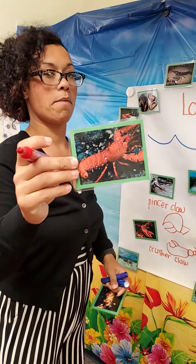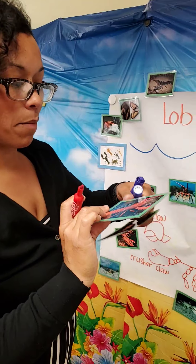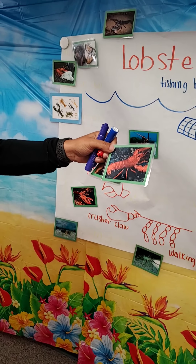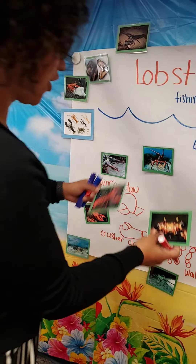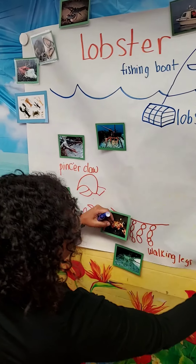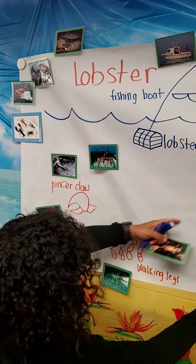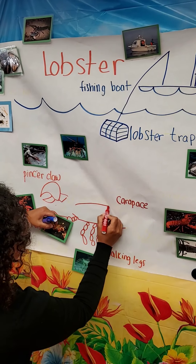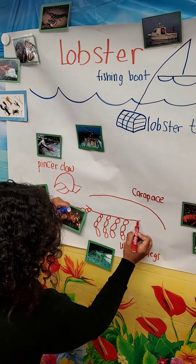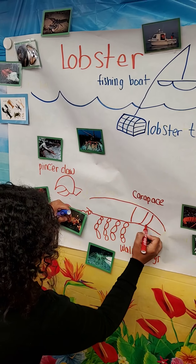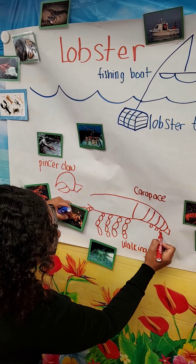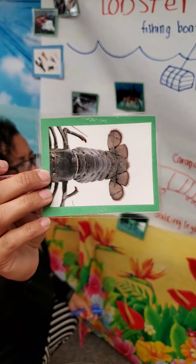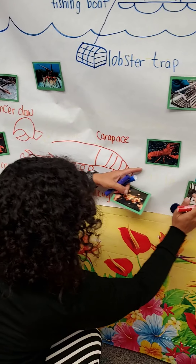This is the carapace, and the carapace is the shell of the lobster. Here is the shell. But that's not all — there are more parts of the lobster. The lobster also has a tail fan. It looks like a fan and it is called the tail fan.